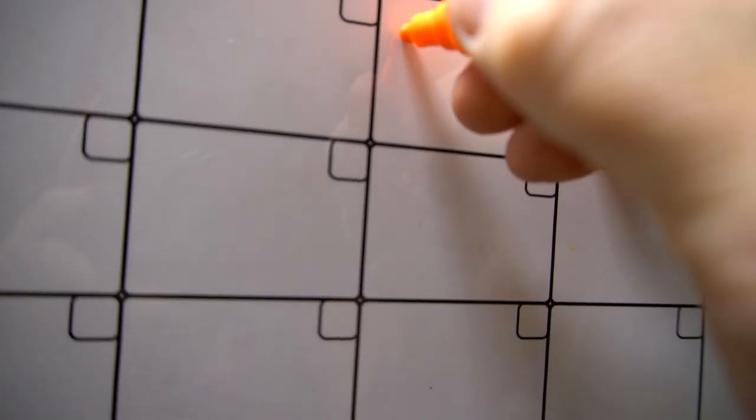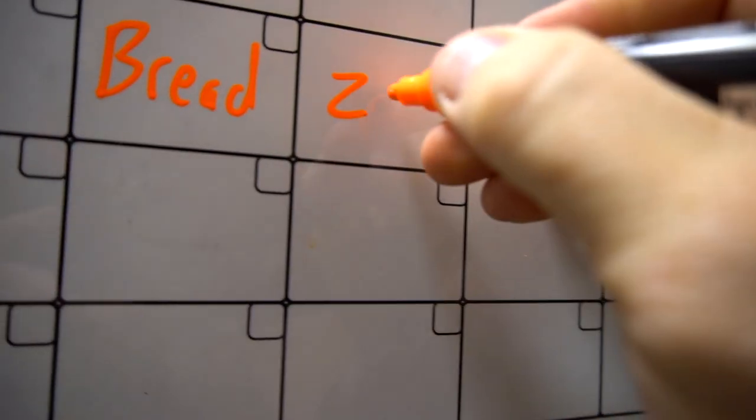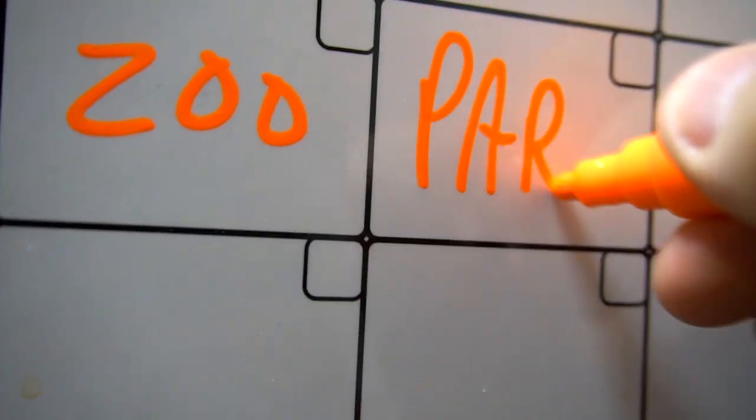Here's a whiteboard. 'Need to pick up bread. Zoo.' And it writes awesome.